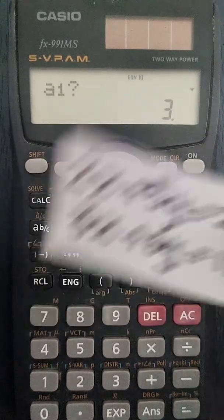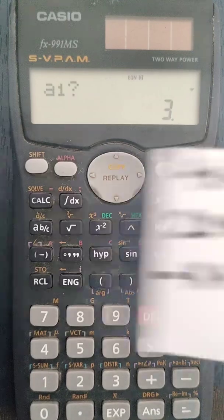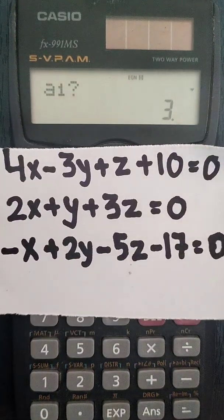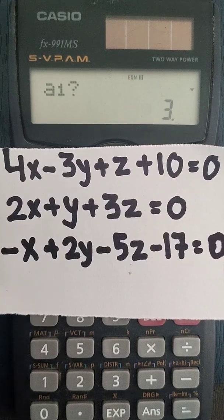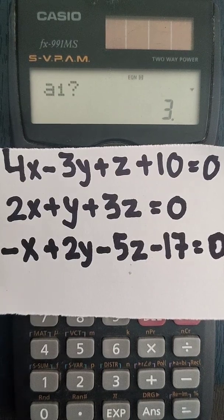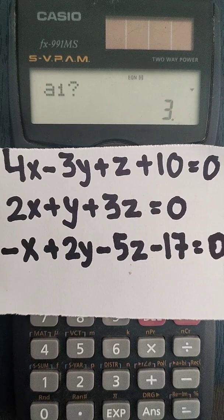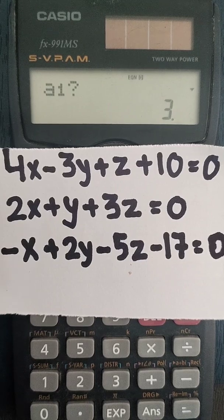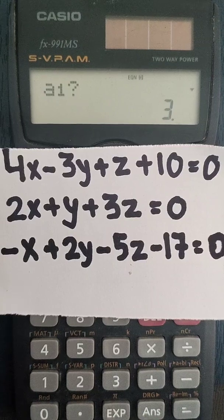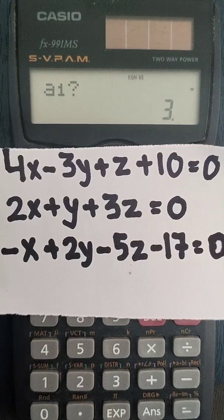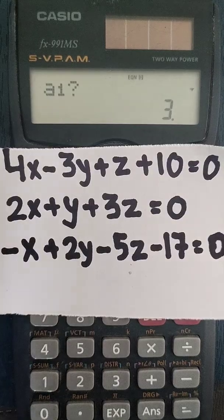Now let us take another example to solve three equations that has three unknown variables. The example is 4x minus 3y plus z plus 10 equal to zero, 2x plus y plus 3z equal to zero, minus x plus 2y minus 5z minus 17 equal to zero. This is the three equations that contain three unknown variables.